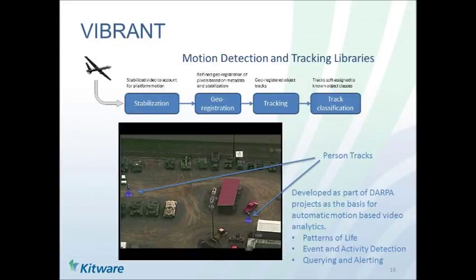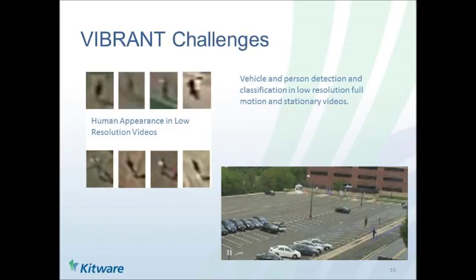Vibrant is our motion detection and tracking component. We recently got permission to release this. It uses MAPTK and other techniques for stabilization and can do basically real-time tracking of incoming video streams — tracking vehicles and persons, classifying them, dealing with the low-resolution challenges of video from aerial platforms. It has capabilities for segmenting out blobs that look like people and blobs that behave like vehicles. It's one of our bread-and-butter applications.